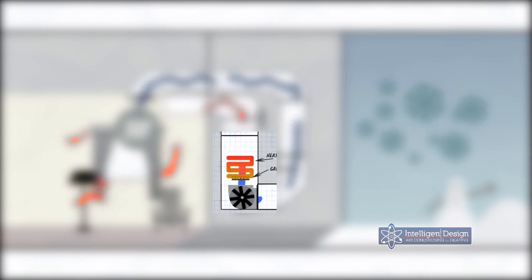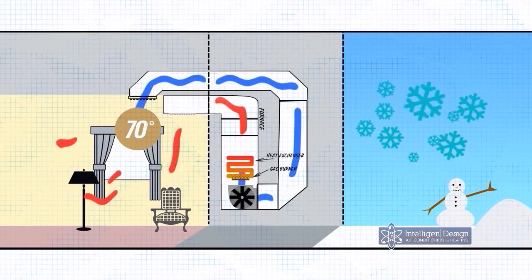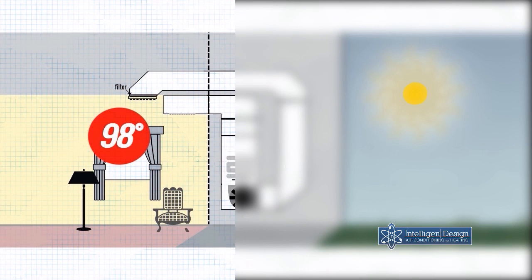So the furnace is pretty simple in the wintertime. The blower is sucking cold air from the house into the furnace over the gas burners, warming the air up and returning it back into the house. Now if it's summertime, obviously the air in your house is going to be hot if the air conditioner is not running.